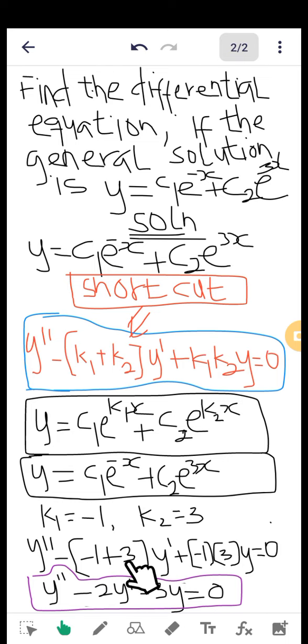-1 + 3 gives us positive 2, so when it comes out you get -2y'. And when we multiply -1 by 3, we get -3, then you attach the y to it: y'' - 2y' - 3y = 0.